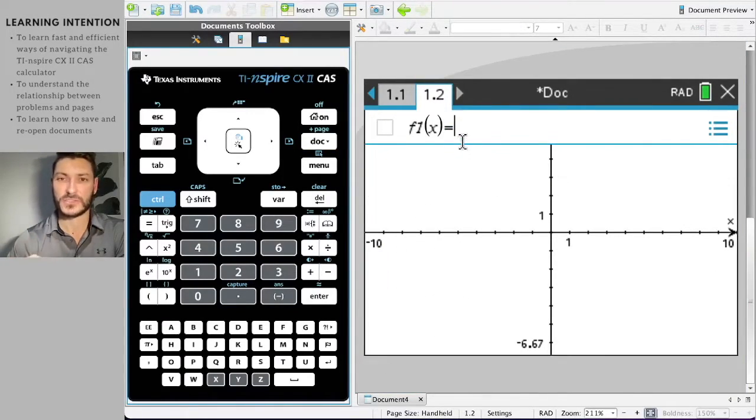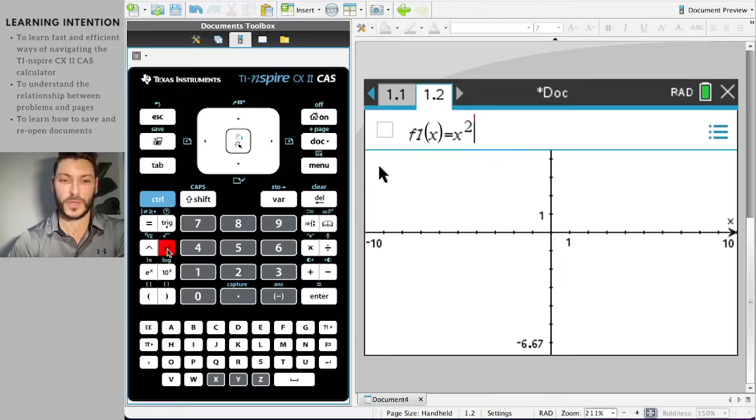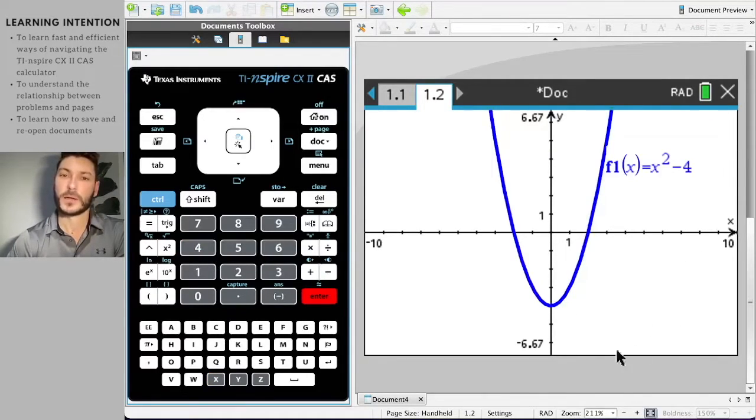So I'm going to enter a basic parabola. Let's say F one of X equals X squared minus four or something like that. Here's my parabola. Now, I'll get into in future videos using graphs and determining intercepts and all of that. For now, I just have created this function and notice that it's labeled F one of X. Okay.